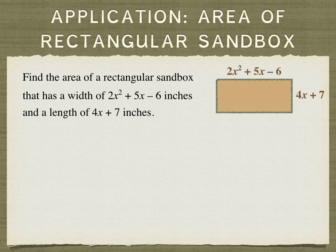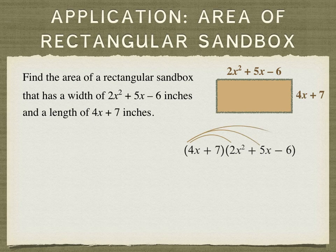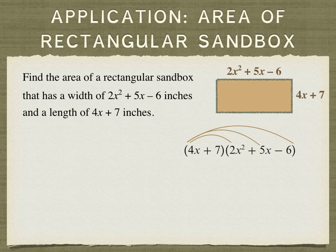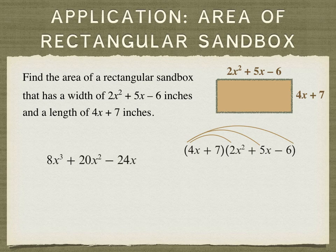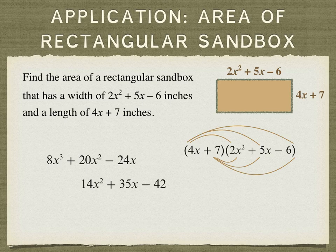So the area would be multiplying the width times the length, and I can use the double distributive. When I multiply 4x times the 3 terms, here's what I get. And now multiply the 3 by the 3 terms, and I can put that product underneath, lining up like terms.